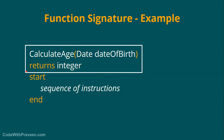This makes it very clear that whenever you call the calculate age function, you have to pass a date — referring to the date of birth of a person. And since it returns integer, whoever is calling calculate age can safely assume this function will return only integer and implement their logic accordingly. That is the main purpose of the function signature.